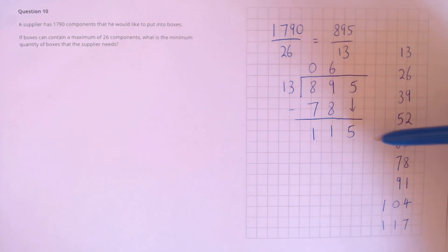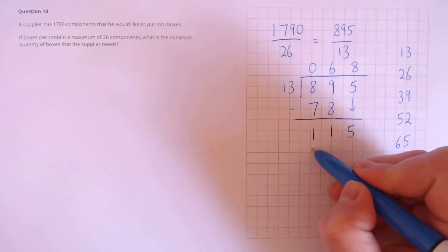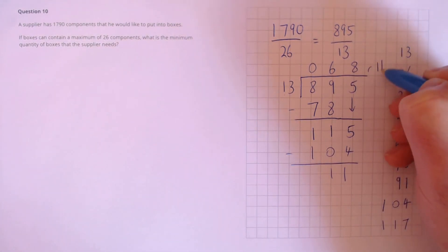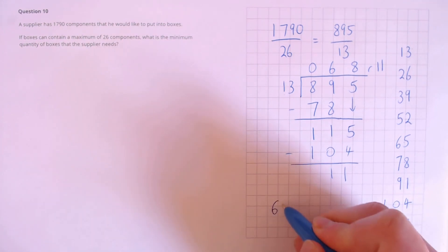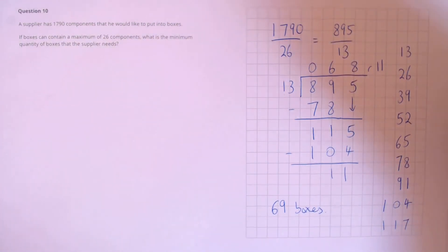So, 13's into 115, that's 1,2,3,4,5,6,7,8. And the remainder is 11, remainder 11. So, our answer is 68, remainder 11. We'll need to fit those 11 into one of the box. So, our final answer has to be 69 boxes, with that last box not being quite full.